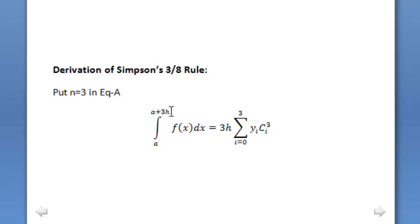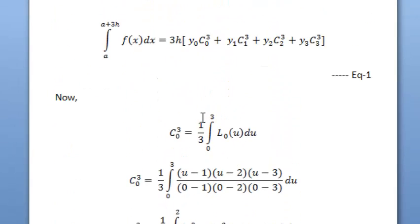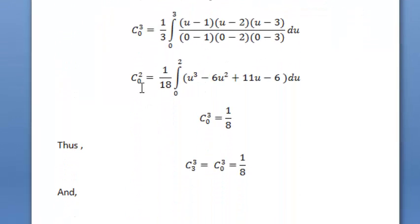Now, deriving Simpson's 3/8 rule, we put n equals 3 in equation (a). We get 3h times the summation from i equals 0 to 3 of y_i c_i3. We need to find c₀₃, c₁₃, c₂₃, and c₃₃. Using the symmetry formula, c₀₃ equals 1/8, and c₃₃ equals c₀₃, which is also 1/8.